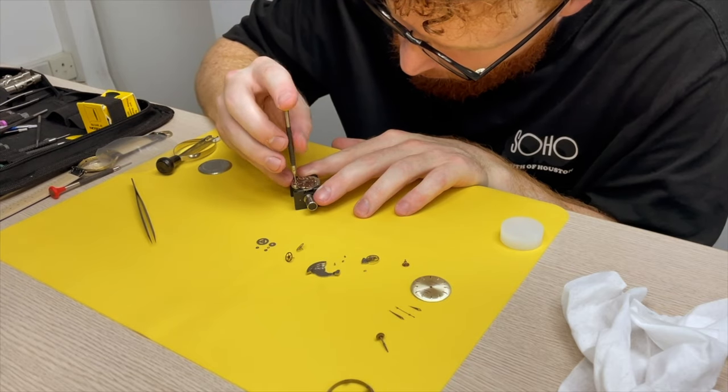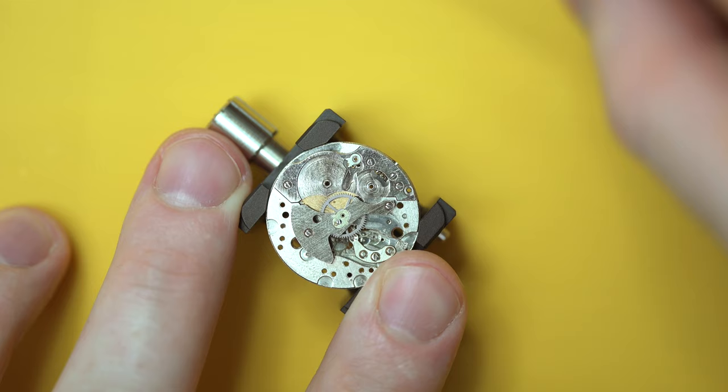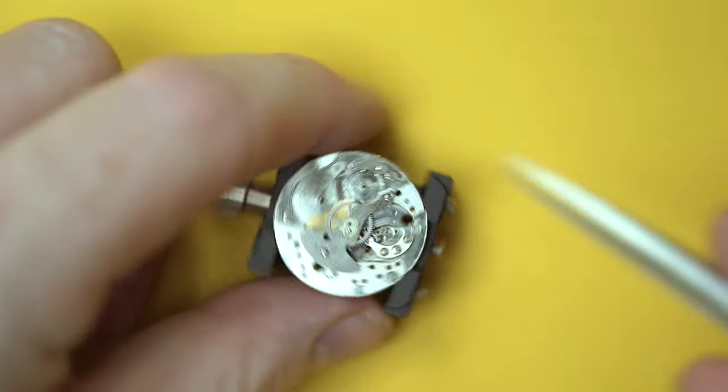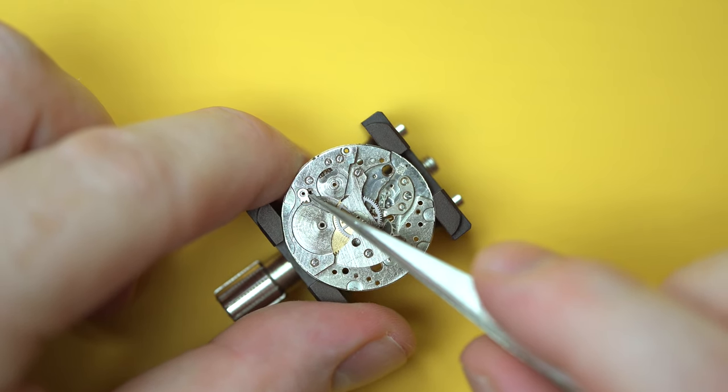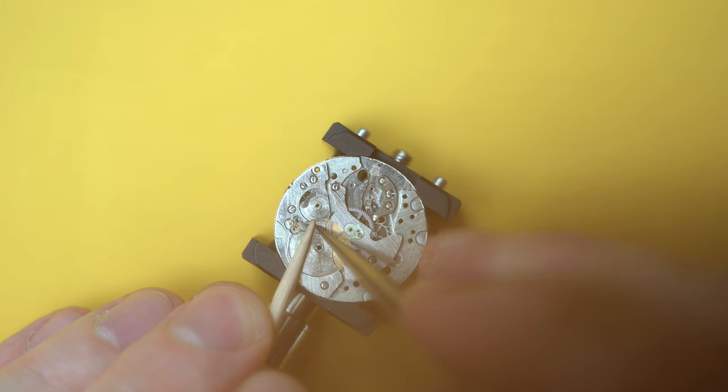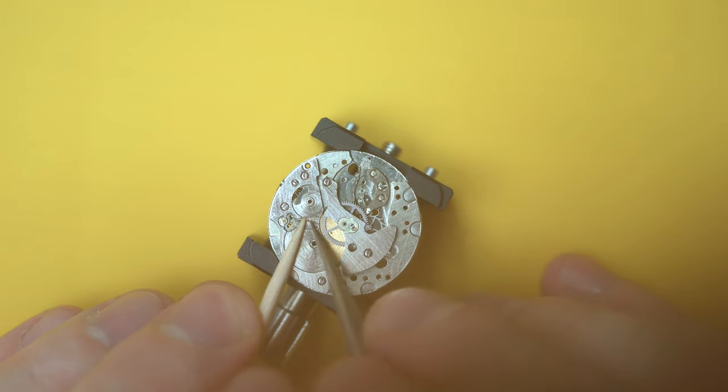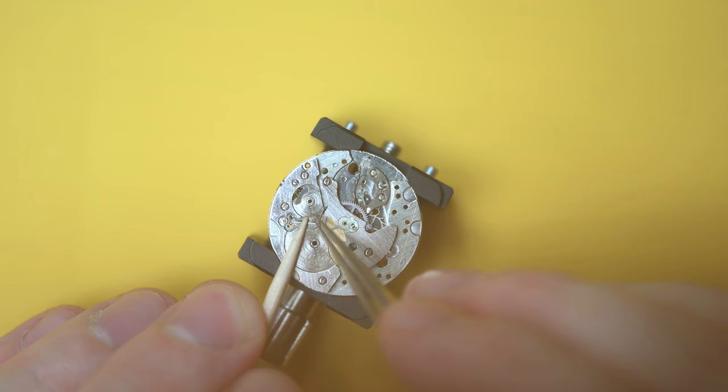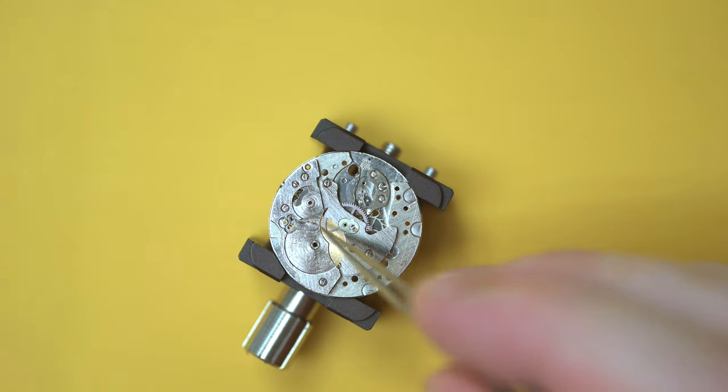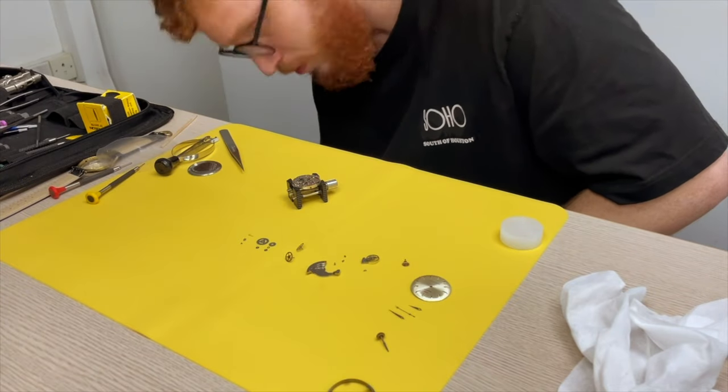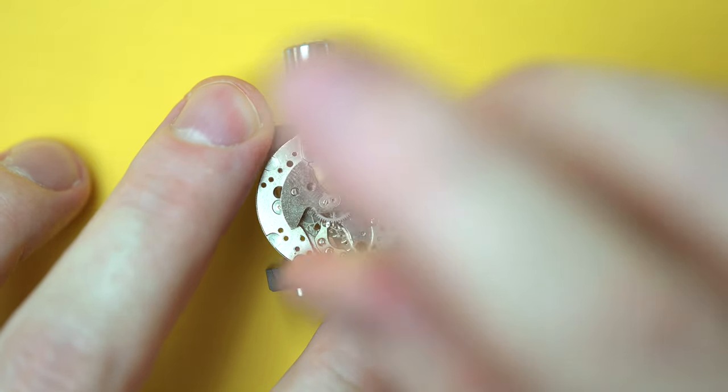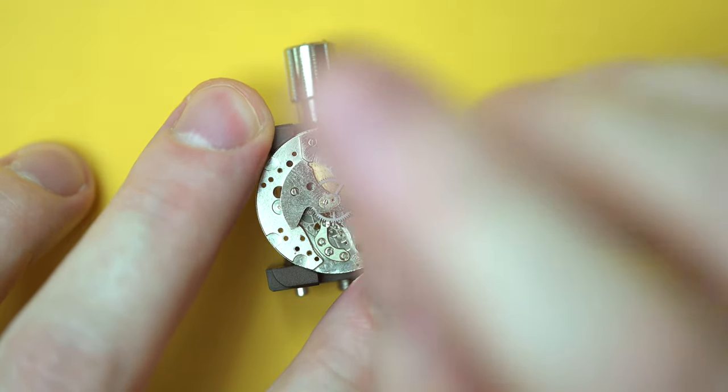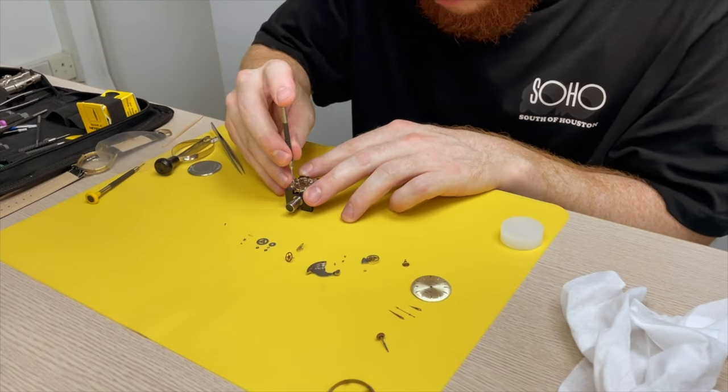So now we've got the crown wheel off, the ratchet wheel off, we can take off this little bridge. It's only held in place with two screws. But first I'll take off the click first. So the click is just what prevents the ratchet wheel from unwinding in the wrong direction. So when you wind the watch up, it keeps the power stored into the spring below.